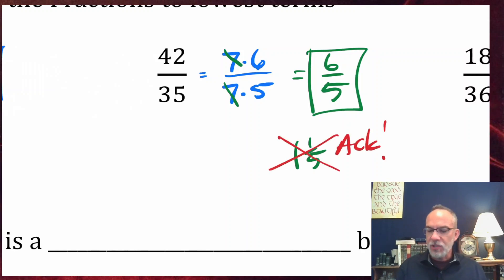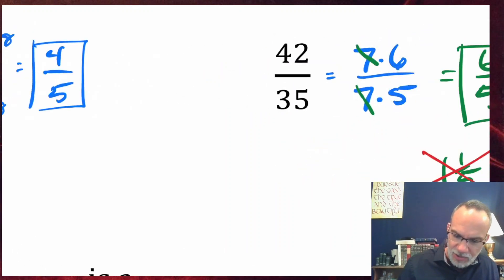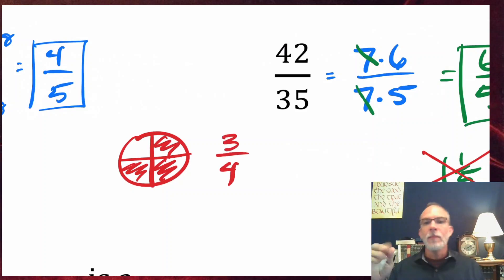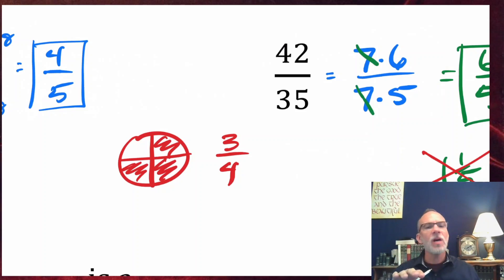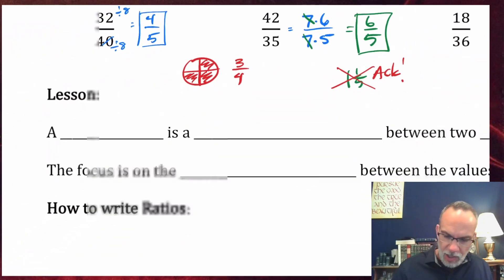A fraction — let me draw a circle here, cut it into four equal pieces, and shade three of them. You would say that's three over four. Both the three and the four tell you about pieces of that circle: the bottom tells you how many total pieces there are, the top tells you how many are shaded. The number three and the number four both mean the same kind of thing.